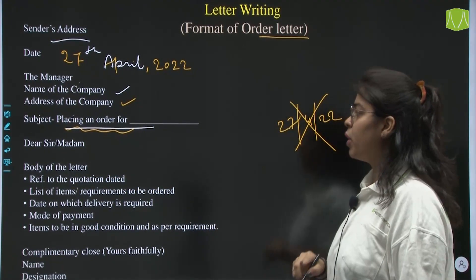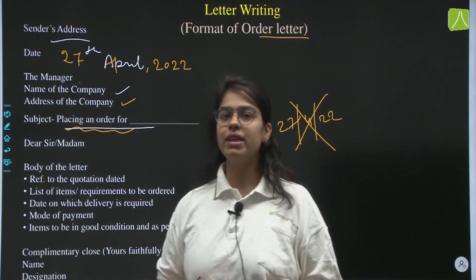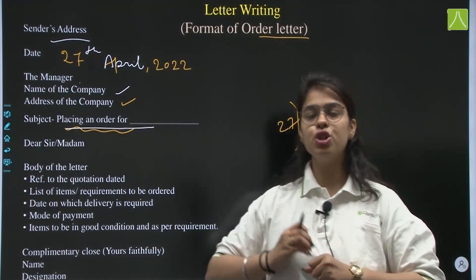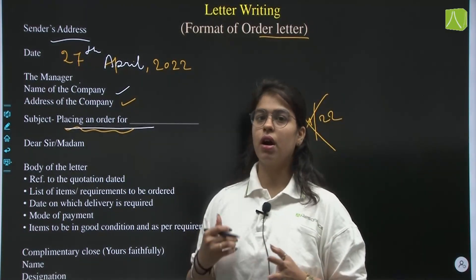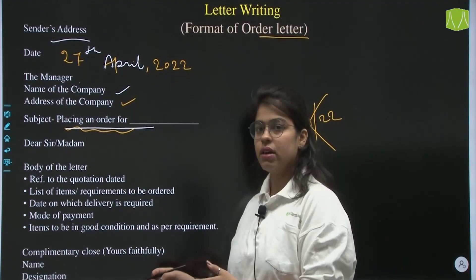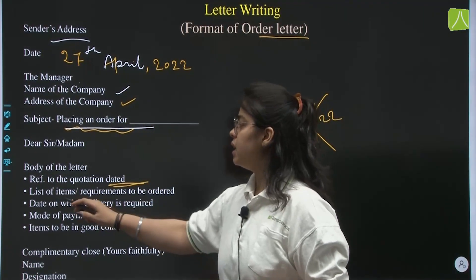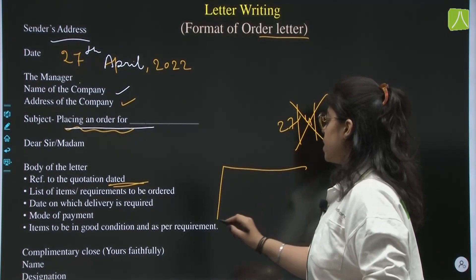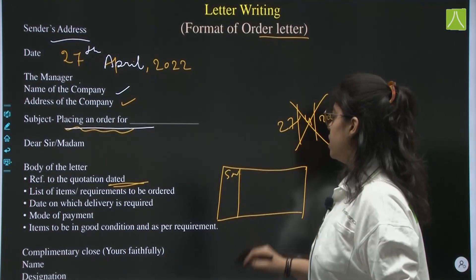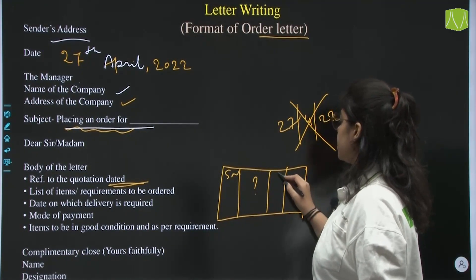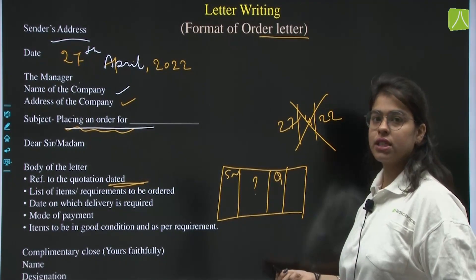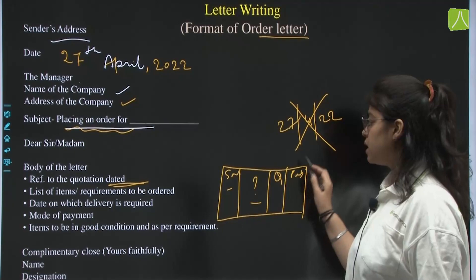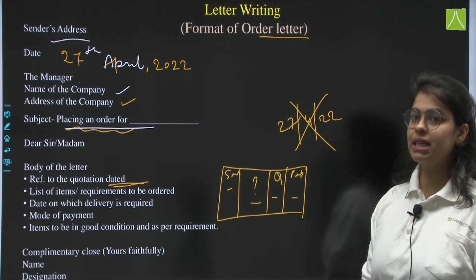The body of the letter always starts with a reference to a telephonic conversation with the person you are placing the order to. Usually we start with: 'In reference to the conversation we had on so and so date,' and that date has to be mentioned specifically. Then list the items you want to order, mostly written in a tabular format with four columns: serial number, items to be ordered, quantity, and the publisher's name if ordering books.